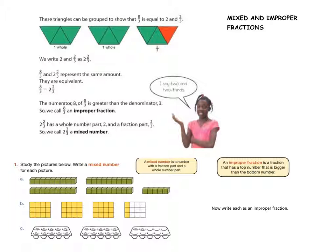Alright, so let's do some practice with mixed and improper fractions. Looking at this example, we can see that they are divided into thirds. So three is our bottom number in both fractions. We could describe this as eight out of three when we're talking about how many are green. Or we could say there are two complete trapezoids and two-thirds of a trapezoid. They both are the same amount.